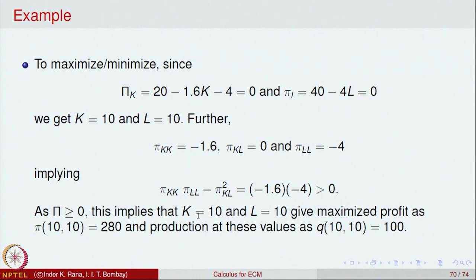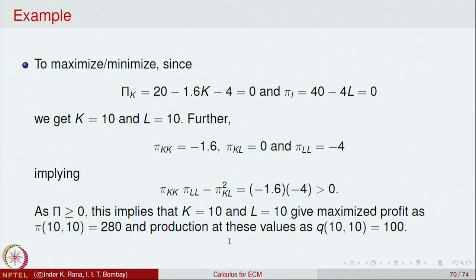The optimal inputs are K = 10 for capital and L = 10 for labour, which maximise the profit. The maximum profit π(10, 10) = 280. The production quantity is 100 units. This illustrates how to apply the second derivative test to maximise a function.